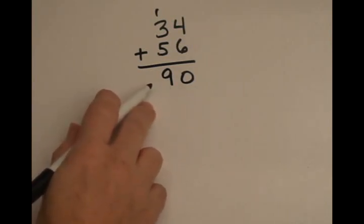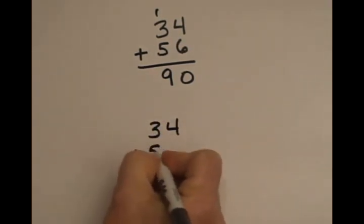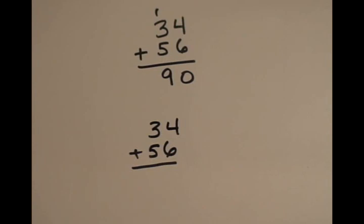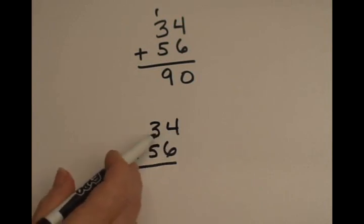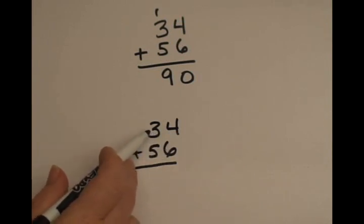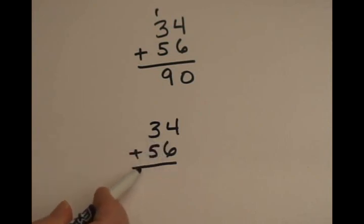This is how you do the problem if it was in your head. You'd say 34 plus 56, and you would add this side first. So you'd add the 34 plus 56. You'd do it by saying it out loud. So you already know what the tens place is. 30 plus 50 gives you 80.